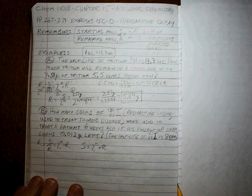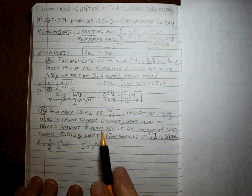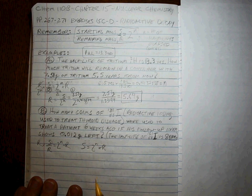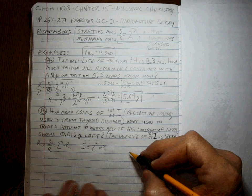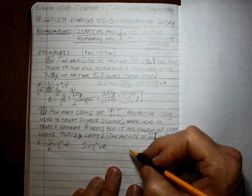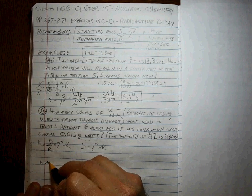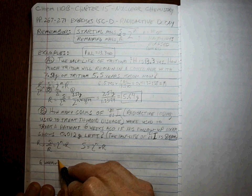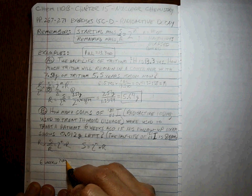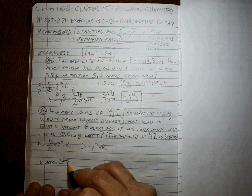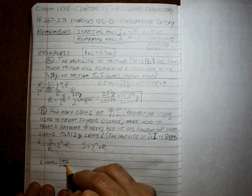So how many half-lives have gone by from six weeks ago up till now? Well, let's figure that out. Six weeks times seven days per every one week. You've got to make sure that your units work.